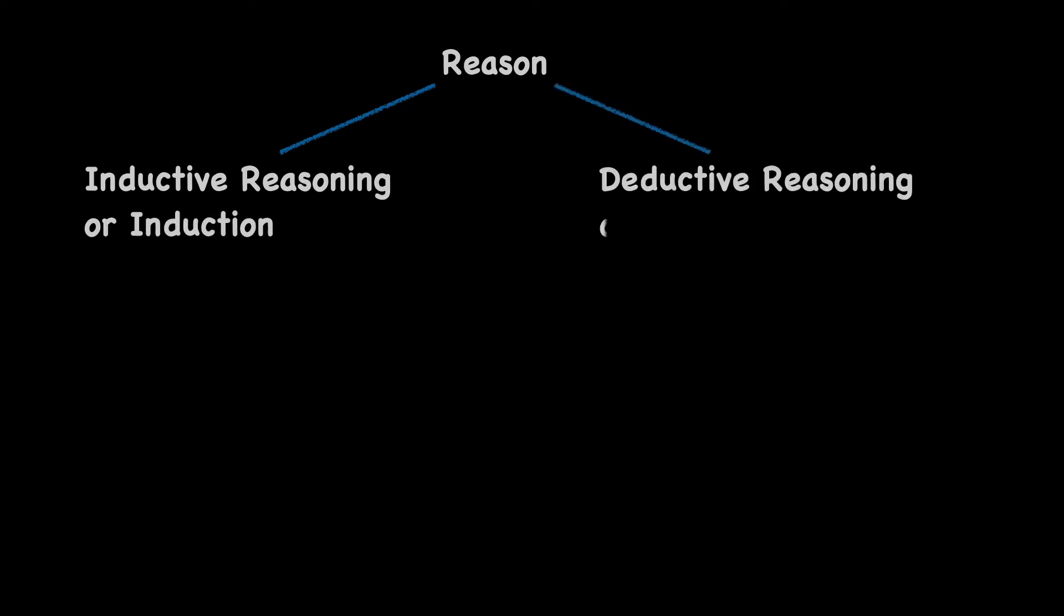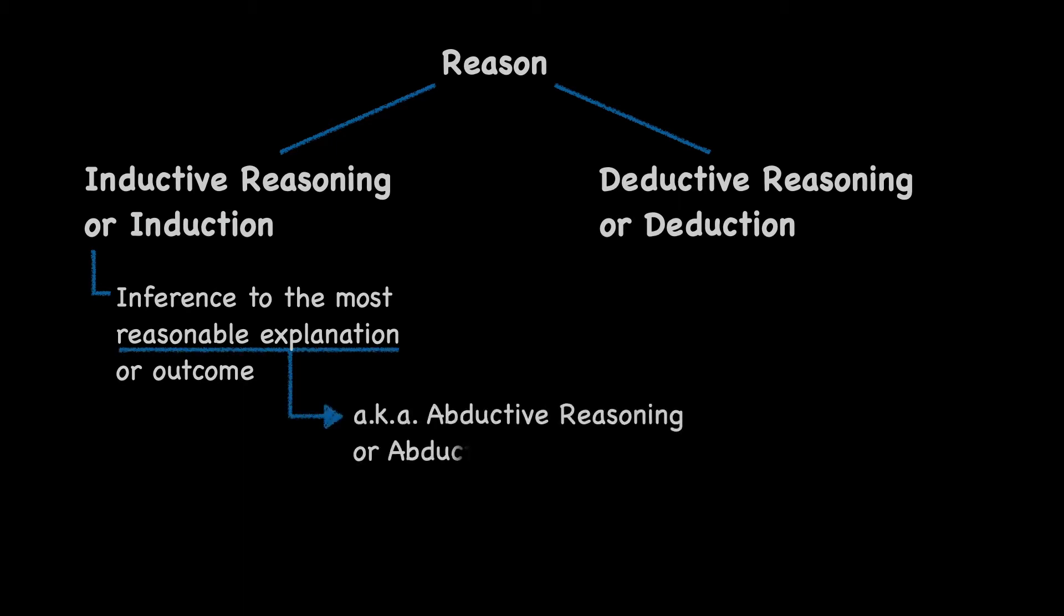Reason is divided into two types: inductive reasoning or induction, and deductive reasoning or deduction. Induction is described as inference to the most reasonable explanation or outcome. Note that this specific type of induction is also sometimes called abductive reasoning or abduction, but as this name is not as common, we will continue to call it induction.